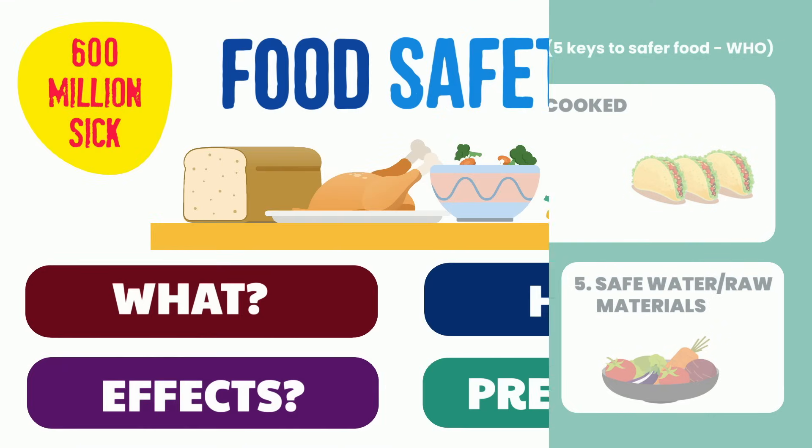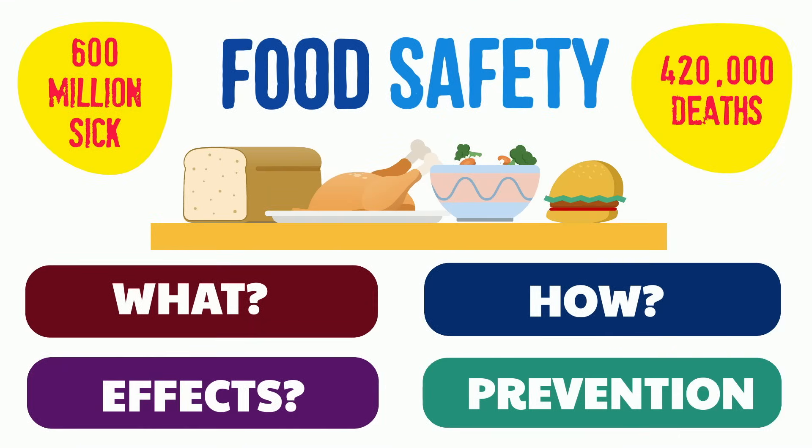And that's a quick introduction to food safety. We've had a look at the major groups of food contaminants, examples of some of the diseases they cause, how contamination may occur across the food supply chain, and ways to prevent unsafe food.